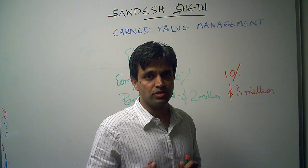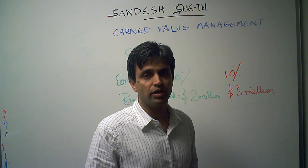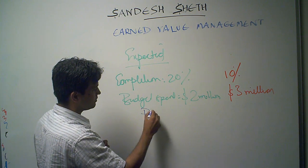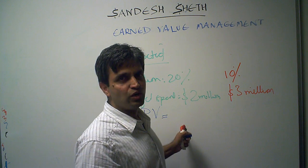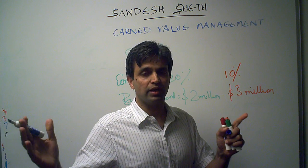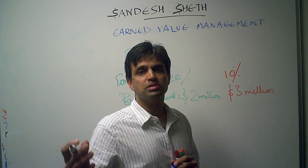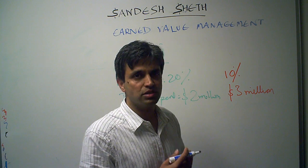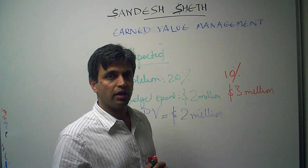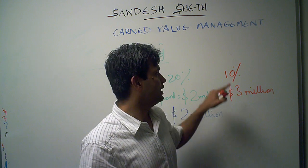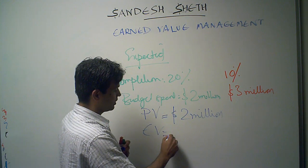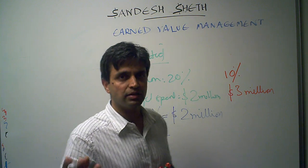This brings us to the first term we will define, and that is called planned value. We know that planned value was 20% of the total project. The total project was worth $10 million, so 20% of $10 million is $2 million. What we have actually achieved is only 10% completion, so the earned value is 10% of $10 million, which is $1 million.